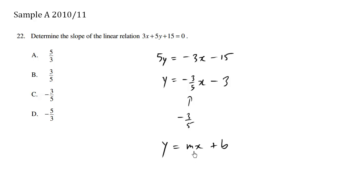And the slope is the m, which is negative 3 fifth. Choice C is the correct answer.